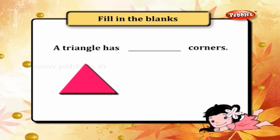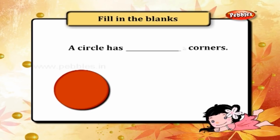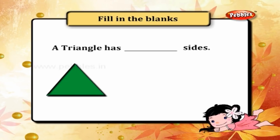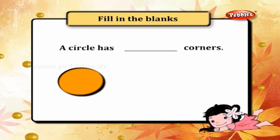A triangle has three corners. A circle has no sides and no corners. A triangle has three equal sides. A circle has no corners.